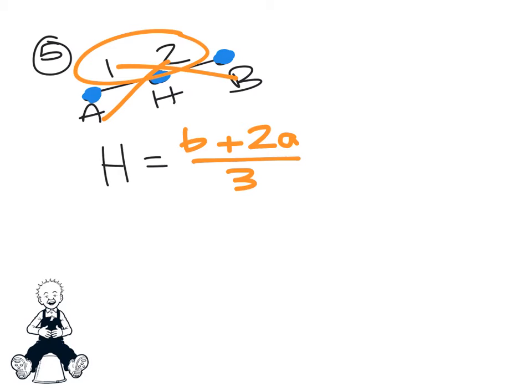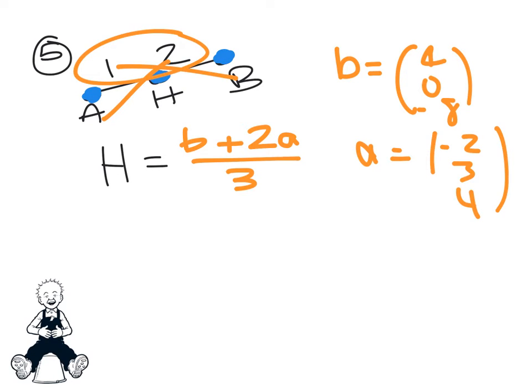So looking at the question, we know that B is equal to the vector 4, 0, negative 8. We know A, looking at the question, is negative 2, 3, 4. So if you plug these numbers into this formula, you can work out H.